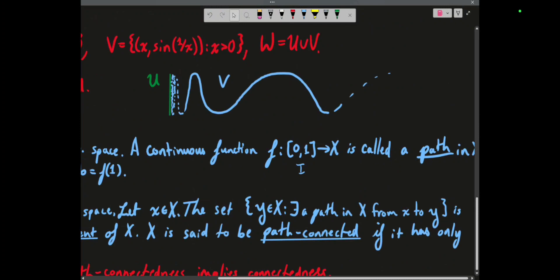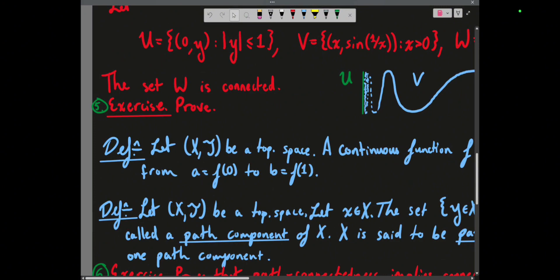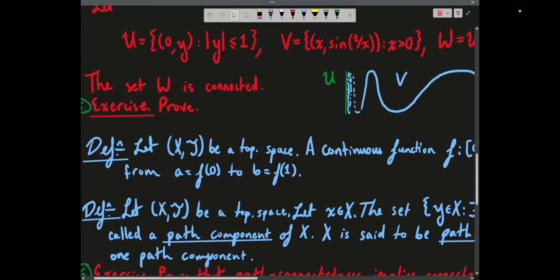A path is a continuous function mapping from the closed interval I = [0,1] with its standard topology to a topological space X. We call this a path in X from a = f(0), the starting point, to b = f(1), the ending point. The path continuously maps this time interval into X, so you get some kind of curve.